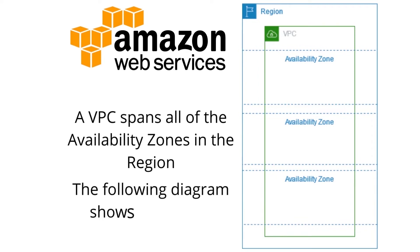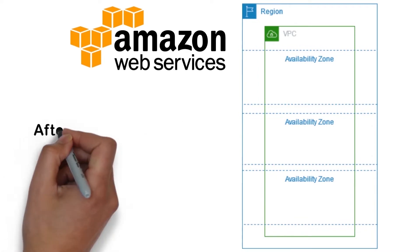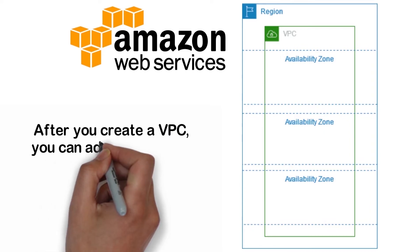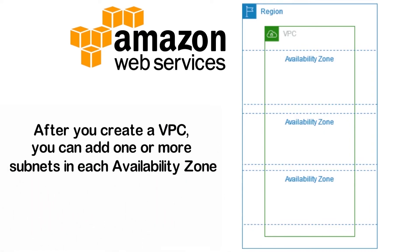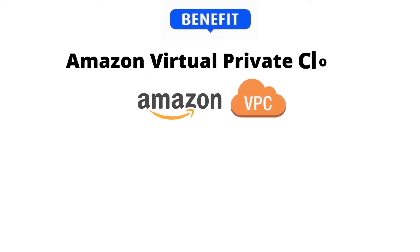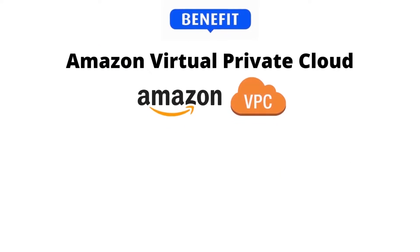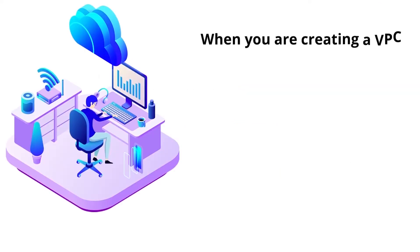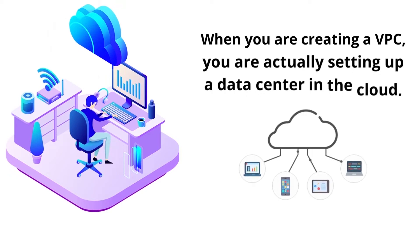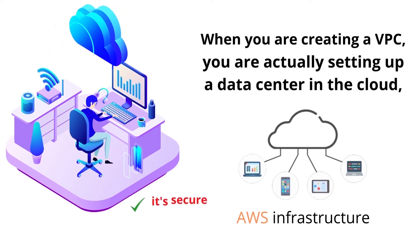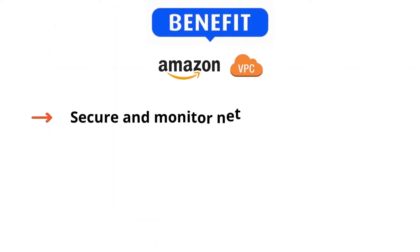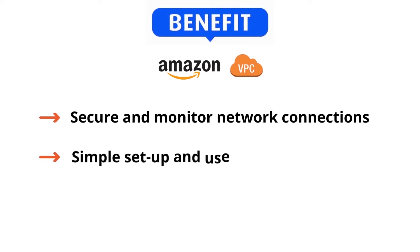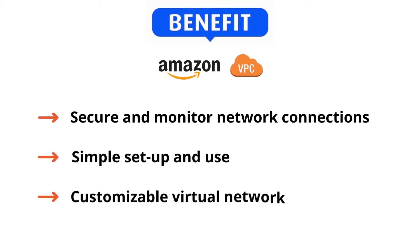After you create a VPC, you can add one or more subnets in each availability zone. Benefits of using Amazon Virtual Private Cloud: when you create a VPC, you are setting up a data center in the cloud utilizing AWS infrastructure. It's secure, highly available, and scalable — with secure and monitored network connections, simple setup and use, and a customizable virtual network.